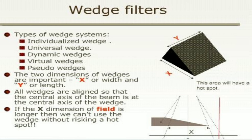Types of wedge systems are individualized wedge, universal wedge, dynamic wedge, virtual wedge, and pseudo wedge. The two dimensions of the wedge are important: x is the width and y is the length. All wedges are aligned so that the central axis of the beam is at the central axis of the wedge. If the x dimension — width of the field — is longer, we can't use the wedge without risking a hotspot.